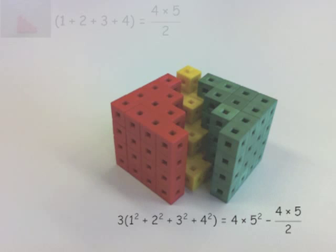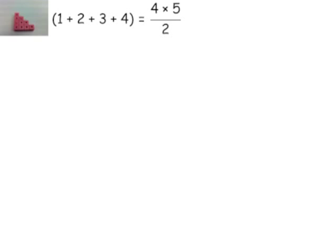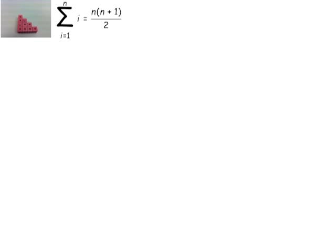So I wonder what that looks like if we start to develop that algebraically. Just remember, the sum of the first few numbers, say one plus two plus three plus four, is actually four times five over two. But we could write that more generally using the sum notation. So instead of saying the sum of one plus two, we could say it's the sum for i equals one to n, and notice that it's equal to n multiplied by n plus one over two.